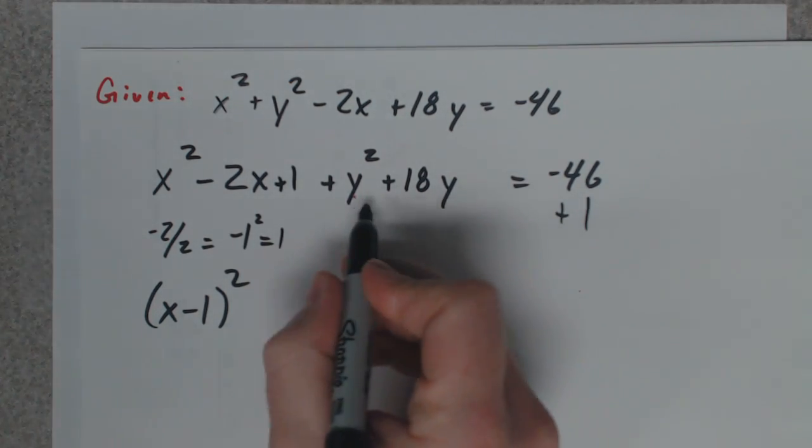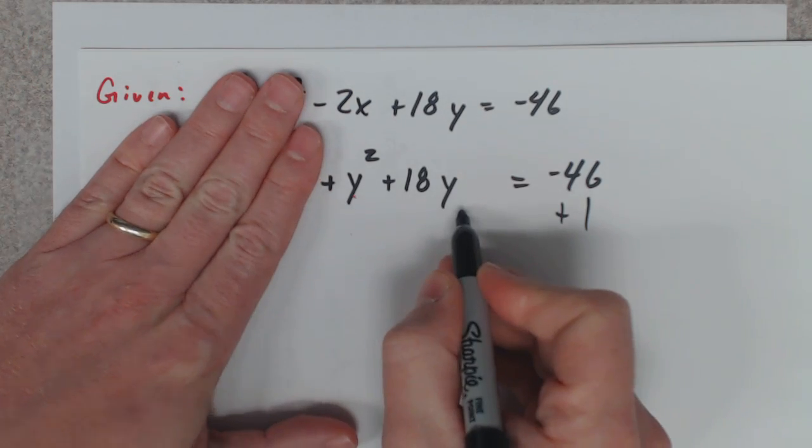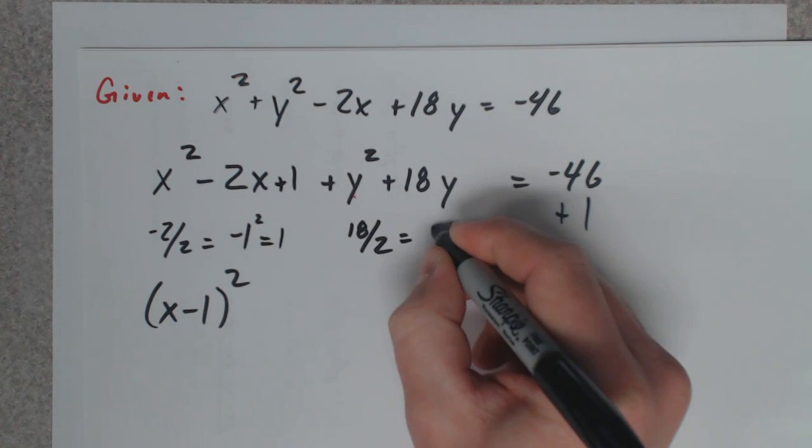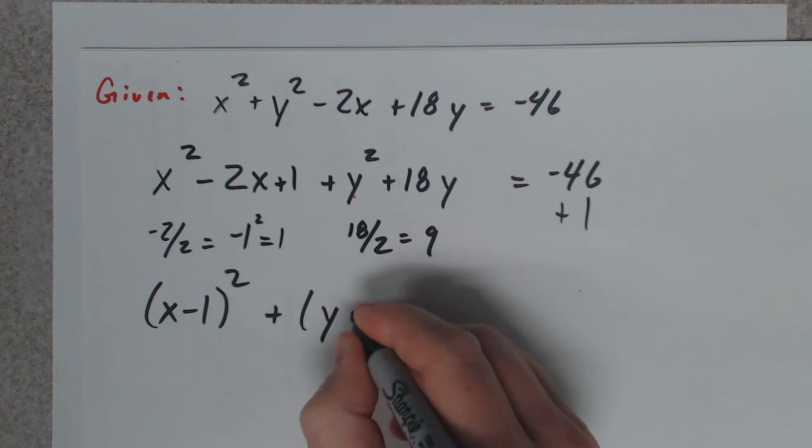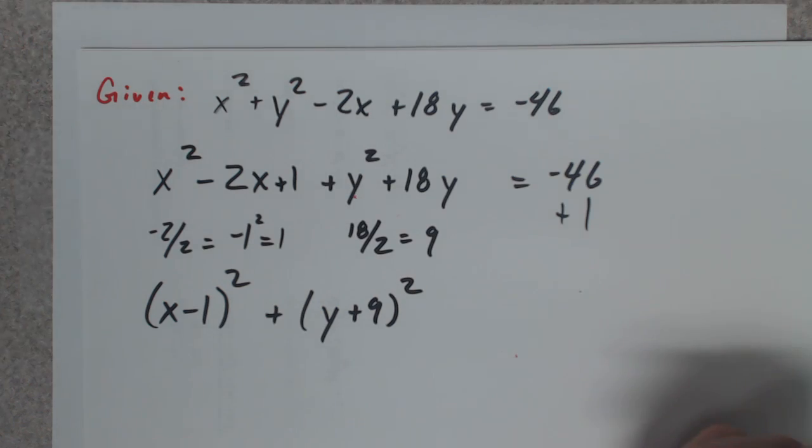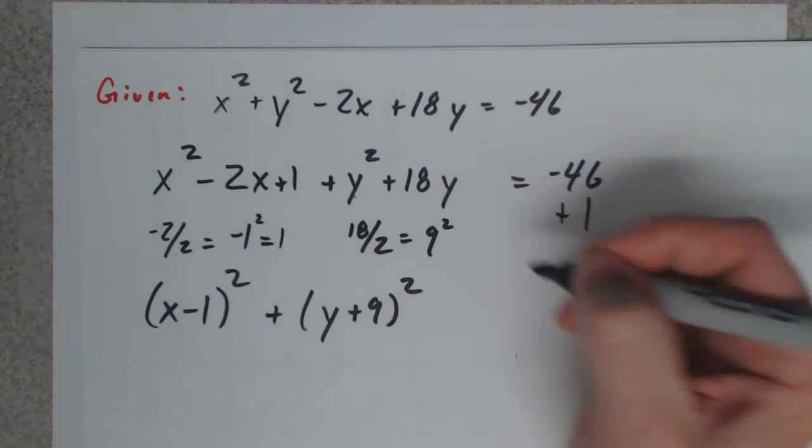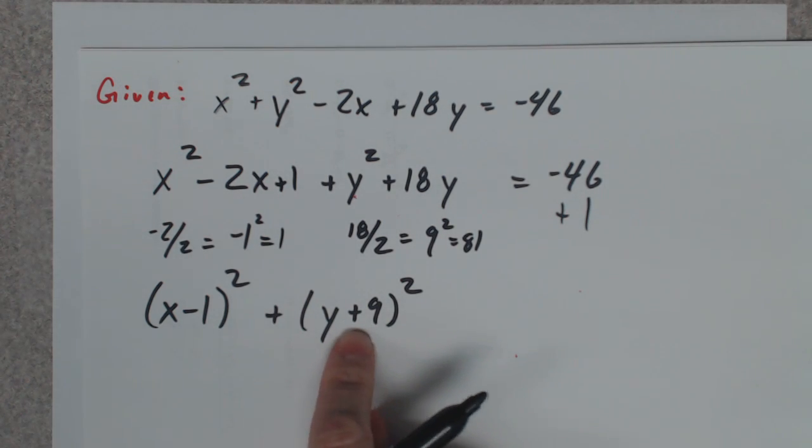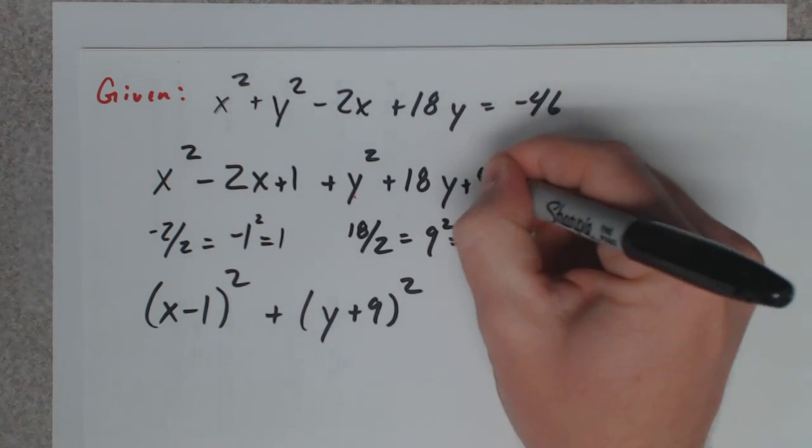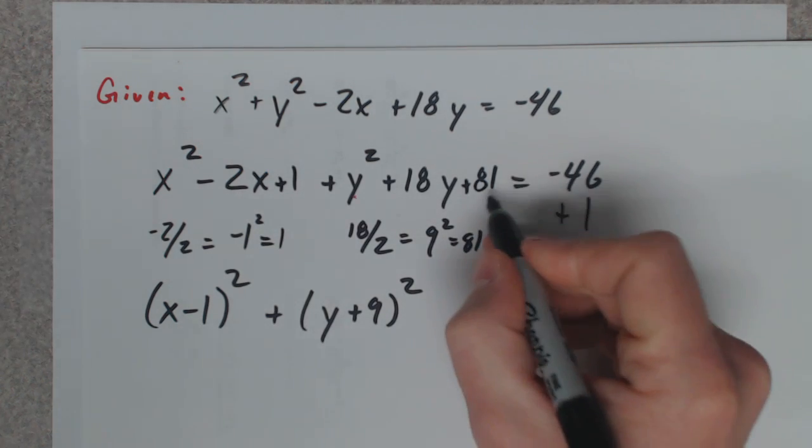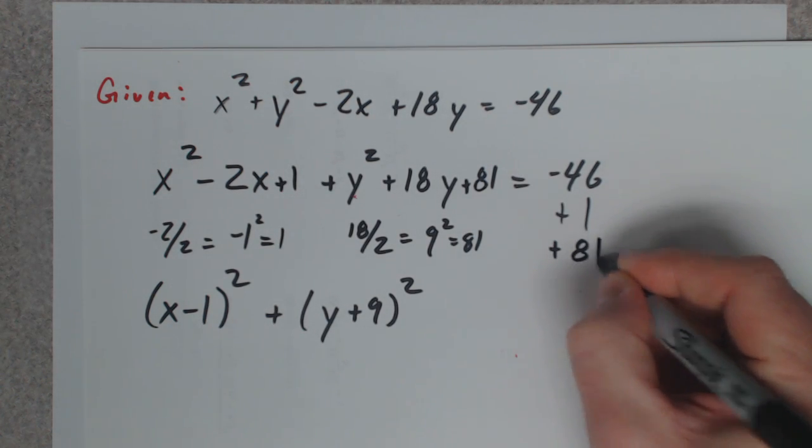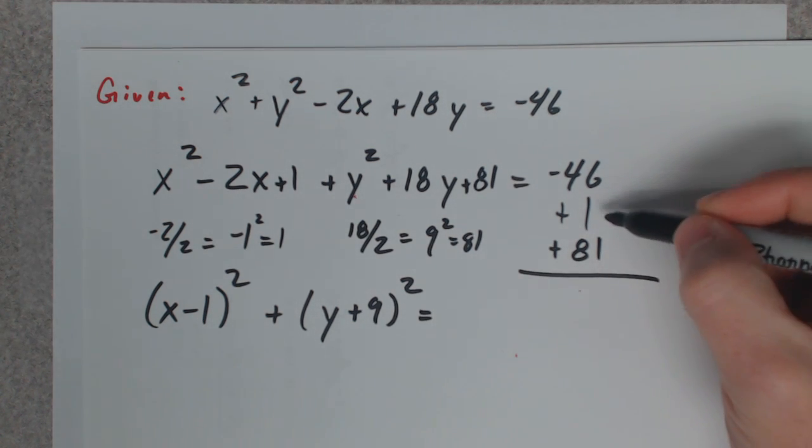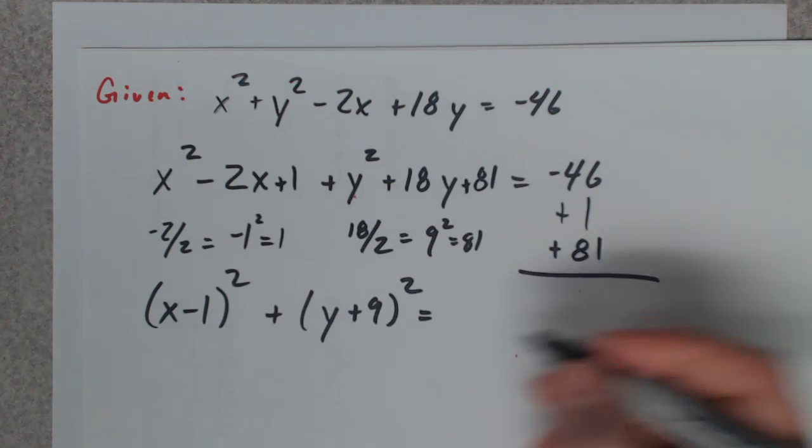Now I'm going to complete the square with the y terms. You take half of 18, you get 9, so automatically y plus 9 squared. When you square 9 you get 81, so inside here there's a positive 81. Technically you've added 81, so if you add to the left you need to add it to the right. When you do that, you take negative 46 plus 1 plus 81, you get 36.